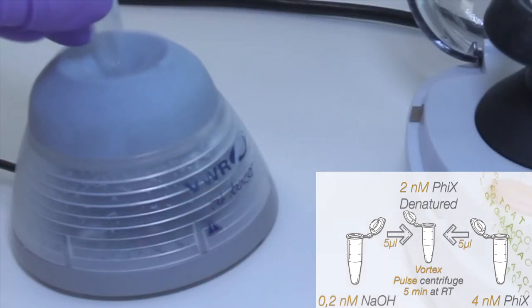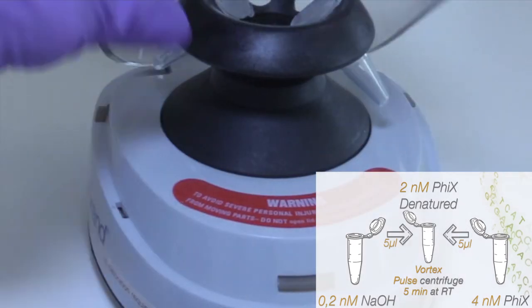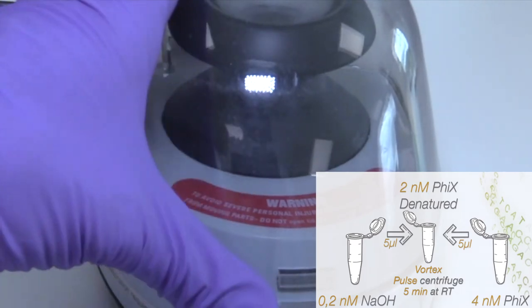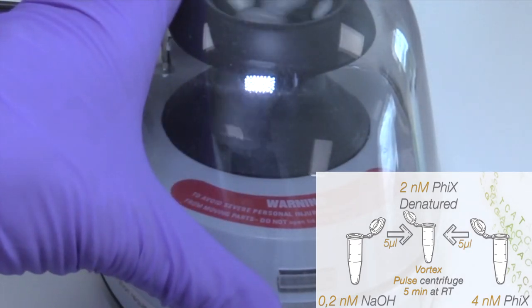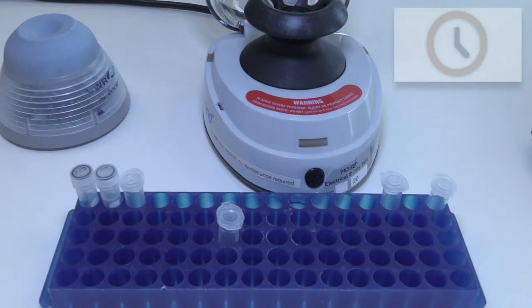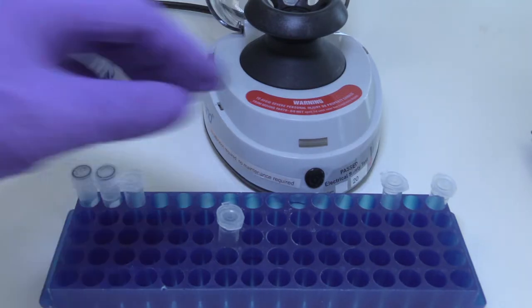Continue by vortexing briefly and then pulse centrifuge the tube. Incubate the microcentrifuge tube at room temperature for five minutes.